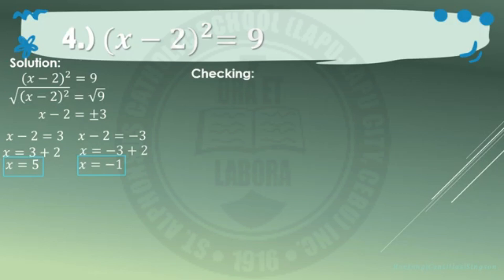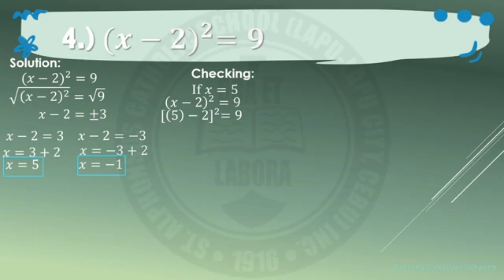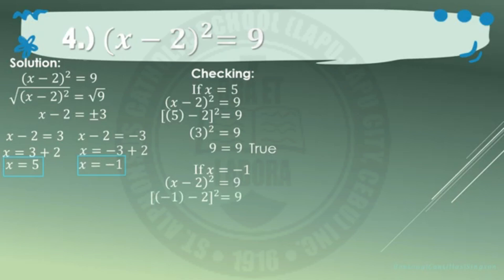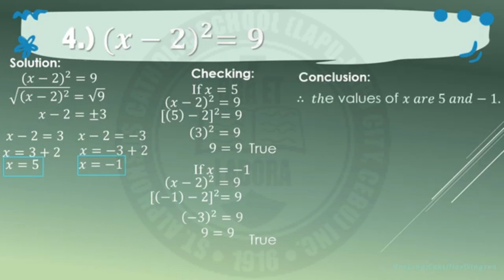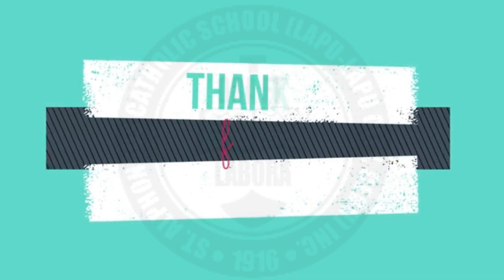Next, checking. Substitute the value of x into the given. If x equals 5: quantity 5 minus 2 squared equals 9. 5 minus 2 is 3, and 3 squared is 9, so 9 equals 9 — true. If x equals negative 1: quantity negative 1 minus 2 squared equals 9. Negative 1 minus 2 is negative 3, and negative 3 squared is 9, so 9 equals 9 — true. Therefore, the values of x are 5 and negative 1.